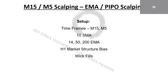That is surgical scalping. I told you I'm going to be blowing through this quickly — a lot of it will get cleared up when we go through the live trading. Now the M15/M5 scalping: we have EMA scalping and price-in-price-out scalping. We set it up on either the M15 or the M5 — totally your choice, it works on both. We use the 10 SMA, the 14, 50, and 200 EMAs. We use the H1 market structure as our bias and the concept of wick fills because we're doing really small scalping — 5 to 10 pips with really high lots.